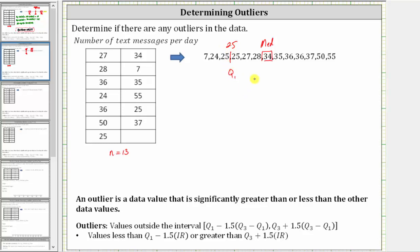Now we need to find the median of the upper half of the data. Again, we have six data values. There are two data values in the middle: 36 and 37. We need to find the mean of these two data values, which would be 36.5. The quantity 36 plus 37 divided by two is 36.5.